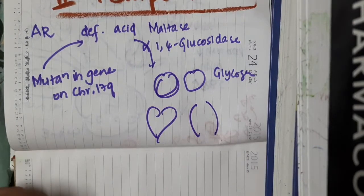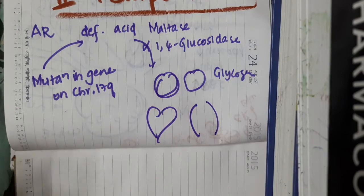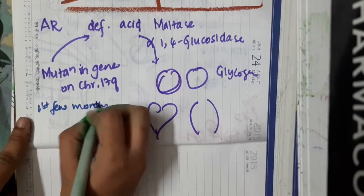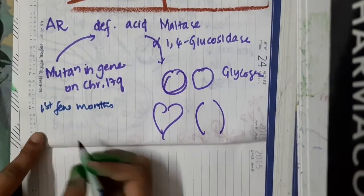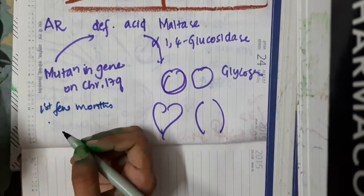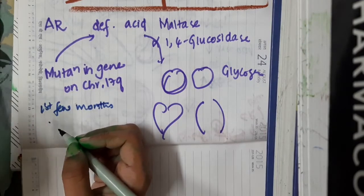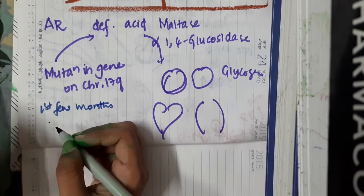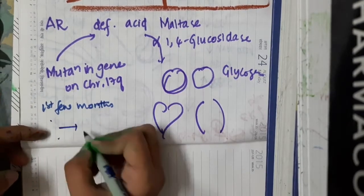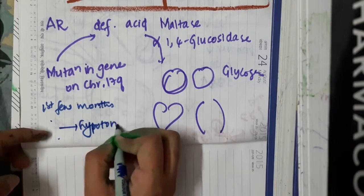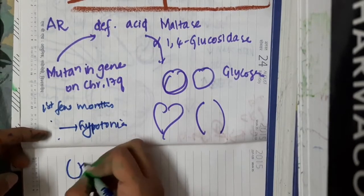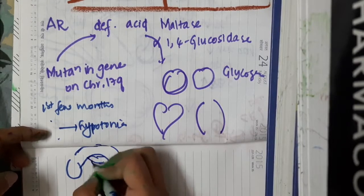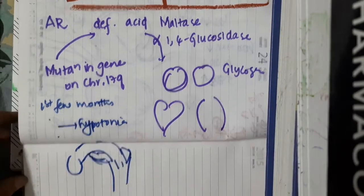Looking at the clinical features: these babies present within the first few months of life because glycogen accumulates and there is no glucose formation — gluconeogenesis is impaired in these patients. The baby presents with hypotonia and generalized muscle weakness, appearing as a floppy infant syndrome.